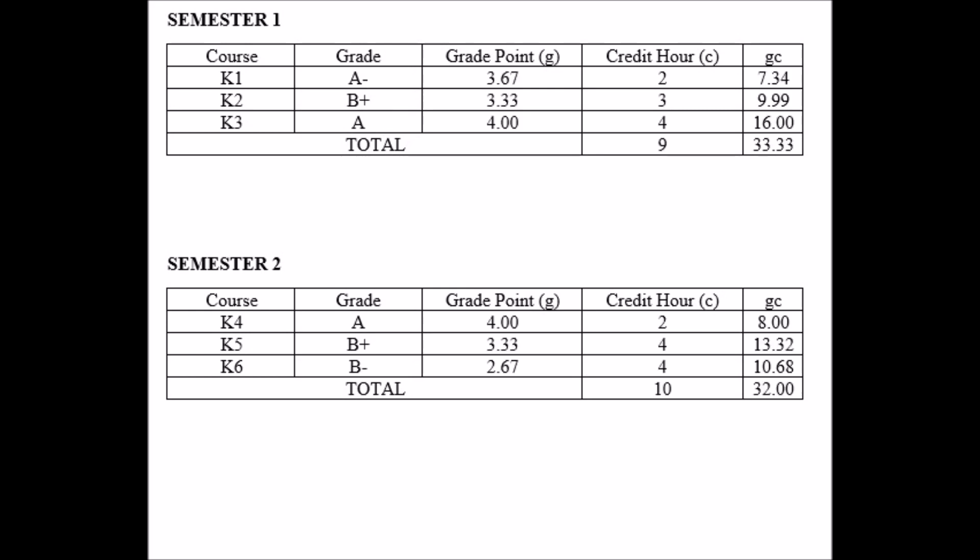We are now done calculating all of those values for 2 semesters. Now I would like to introduce the formula for calculating GPA, or the grade point average, for each semester. What you need to do is take the sum of GC over the sum of C for each semester, and you obtain the GPA for that particular semester, as shown here.